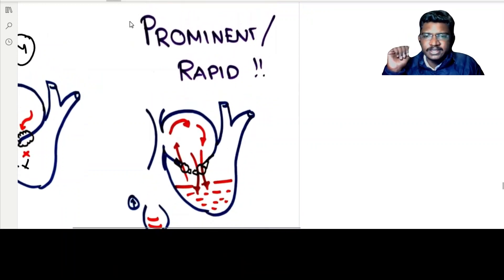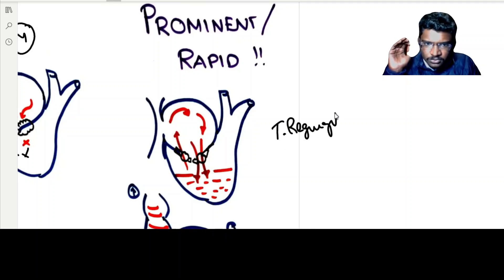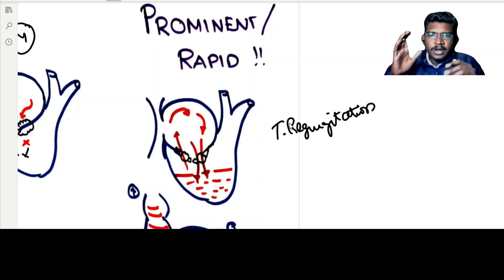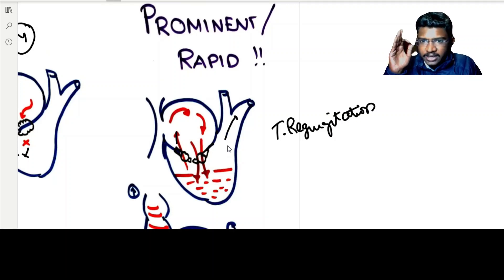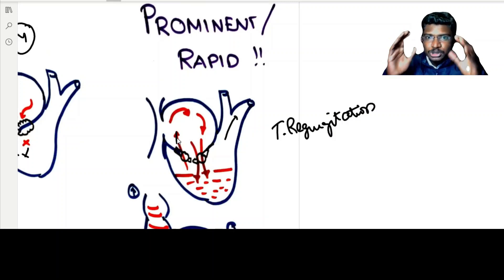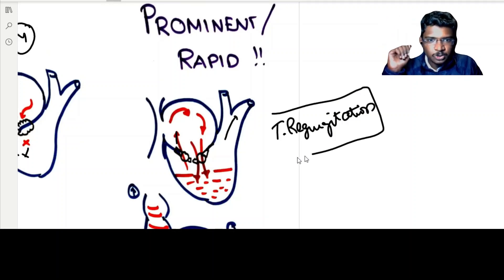Prominent or rapid Y descent — when will this Y descent happen rapidly? Think of tricuspid regurgitation. What happens is all blood pumped into the right ventricular outflow tract is also pumped into the atrium, so atrial pressure is so much elevated and the atrium is so much filled with blood. All that blood falls rapidly into the ventricles, producing a rapid Y descent — which is seen in tricuspid regurgitation.